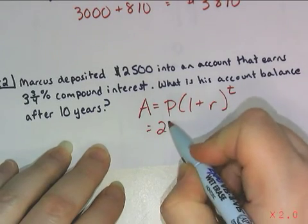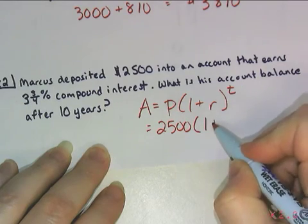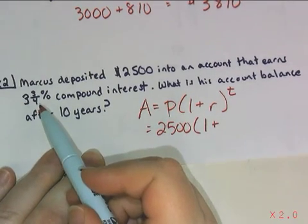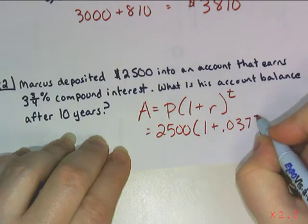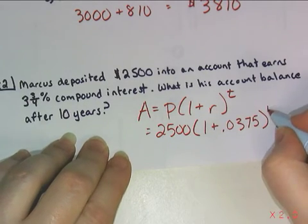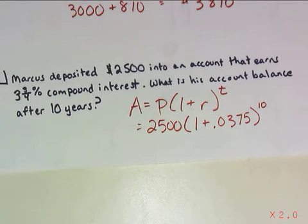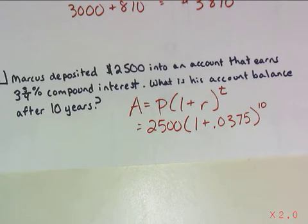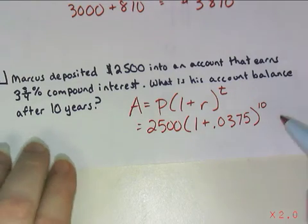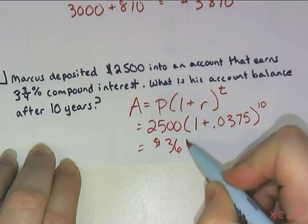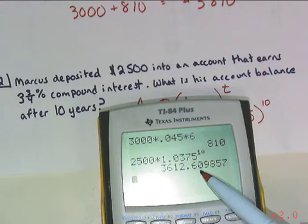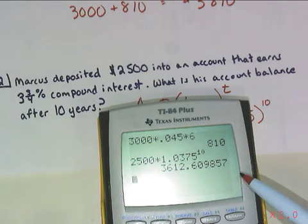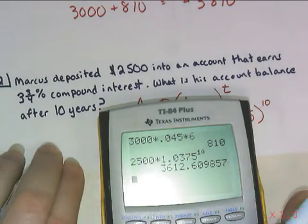We have twenty-five hundred times one plus our interest rate as a decimal. Three and three-quarters percent is not 3.375 — it's 0.0375 — raised to the power of ten years. Using a calculator, the account balance comes out to three thousand six hundred twelve dollars and sixty-one cents. The full decimal was 3612.609857, but since this is a money amount, we round to the nearest hundredth — sixty-one cents.